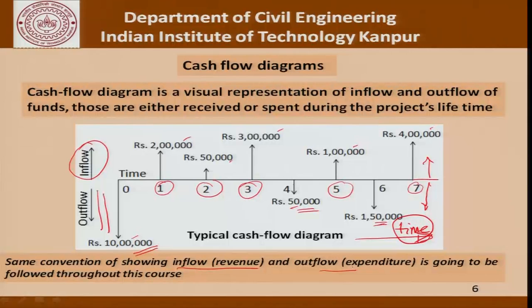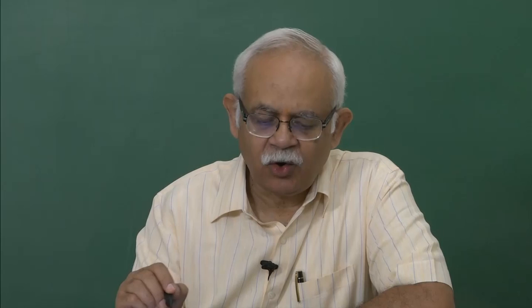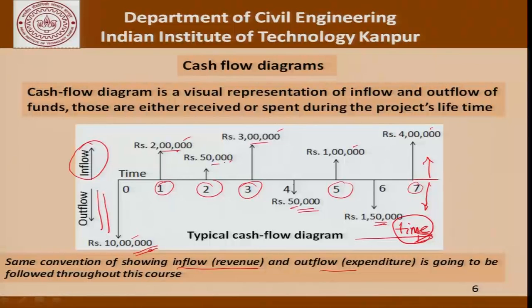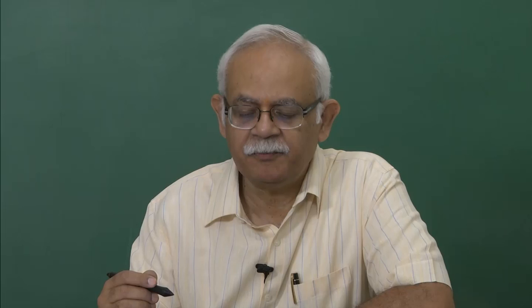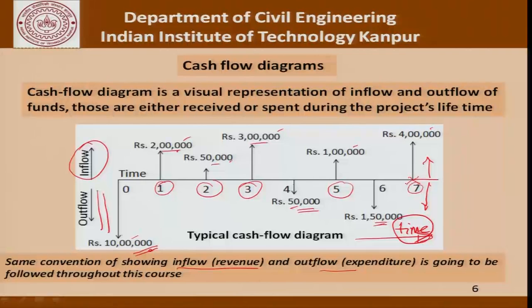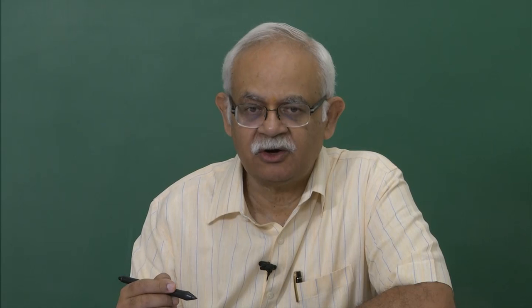We will follow this convention of showing inflow as revenue and outflow as expenditure throughout this discussion. Since outflow and inflow occur at different times, we need to understand the concept of interest to find what the present value of each cash flow is — whether it is 2 lakhs, 3 lakhs, 50,000, or 1 lakh 50,000. Based on present or future value we can determine whether a given investment with this kind of inflow and outflow is acceptable.